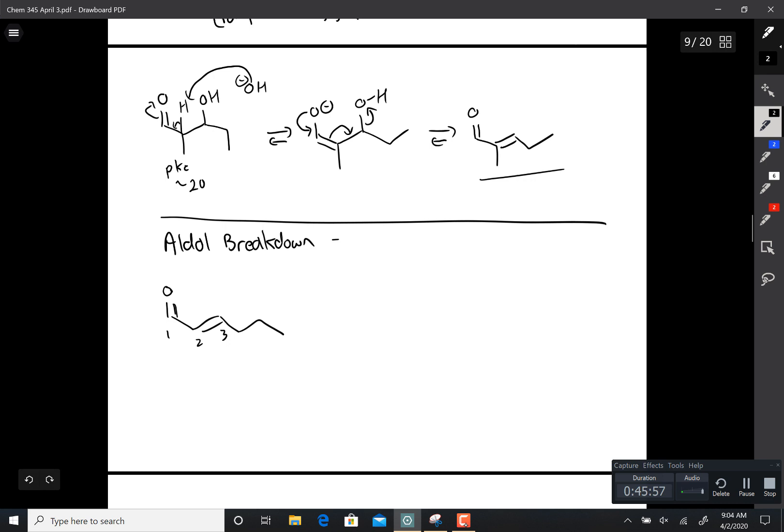You can recognize them because they are called alpha, beta, unsaturated carbonyls. The alpha carbon of a carbonyl is right next to it. The beta carbon is there. And you have a double bond between the alpha carbon and the beta carbon. So it's an alpha, beta, unsaturated carbonyl. Other way of thinking about it is you have a carbonyl is one, you have a 2, 3 double bond.